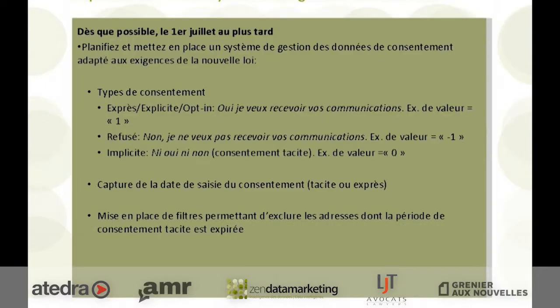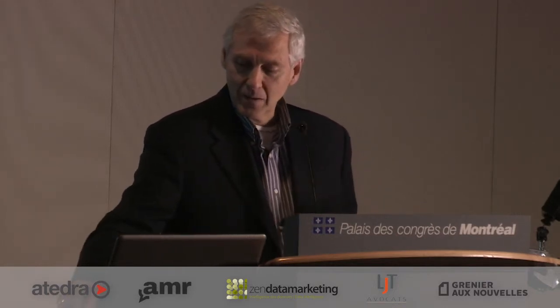Et la mise en place de filtres permettant d'exclure les adresses dont la période de consentement tacite est expirée. Parce que l'expiration tacite, on va le voir dans la ligne du temps — on n'a pas à refaire à chaque semaine ou à chaque mois quand est-ce qu'un consentement se termine. Ça doit tout être automatisé.